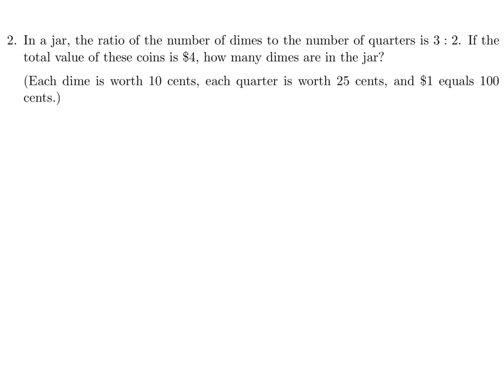In a jar, the ratio of the number of dimes to the number of quarters is 3 to 2. If the total value of these coins is $4, how many dimes are in the jar?